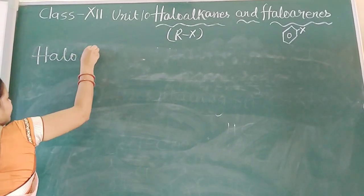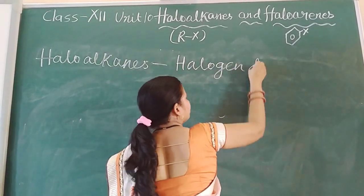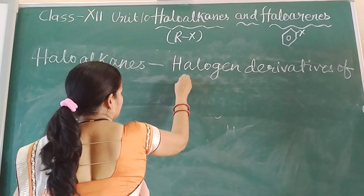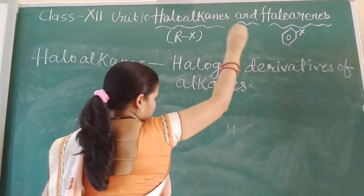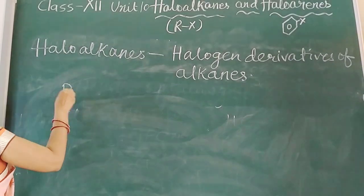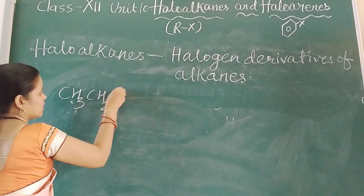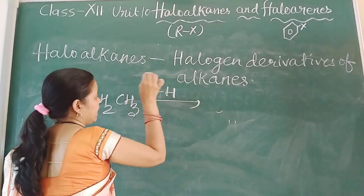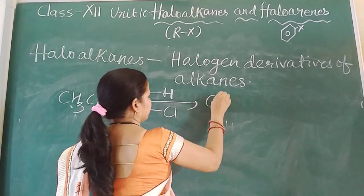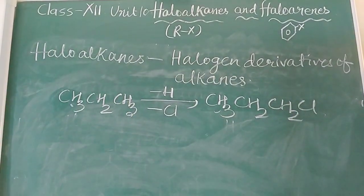What are haloalkanes? Haloalkanes are the halogen derivatives of alkanes. Alkanes you have studied in class 11. Suppose this is one of the alkanes like CH3-CH2 — propane. If one hydrogen is replaced by one Cl atom or any other halogen atom, then chloropropane is formed.